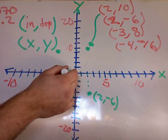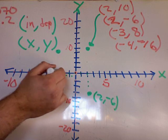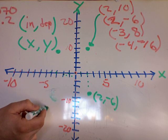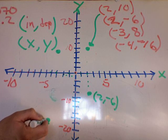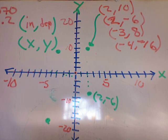And then the next one is (-4, -16). So one, two, three, four, all the way down to sixteen: two, four, six, eight, ten, twelve, fourteen, sixteen.